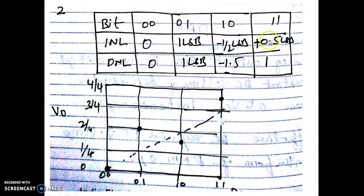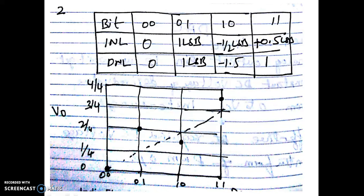The next question involved identifying INL values for a 2-bit DAC. For input 00: INL = 0. For 01: the desired value is 1 LSB but actual is 1 LSB above — INL = +1 LSB. For 10: expected value but actual is -0.5 LSB — INL = -0.5 LSB. For 11: actual is 0.5 LSB above expected — INL = +0.5 LSB. The y-axis should be labeled 1/4, 2/4, 3/4, 4/4, and x-axis should show 00, 01, 10, 11. Many students forgot to label the axes properly.